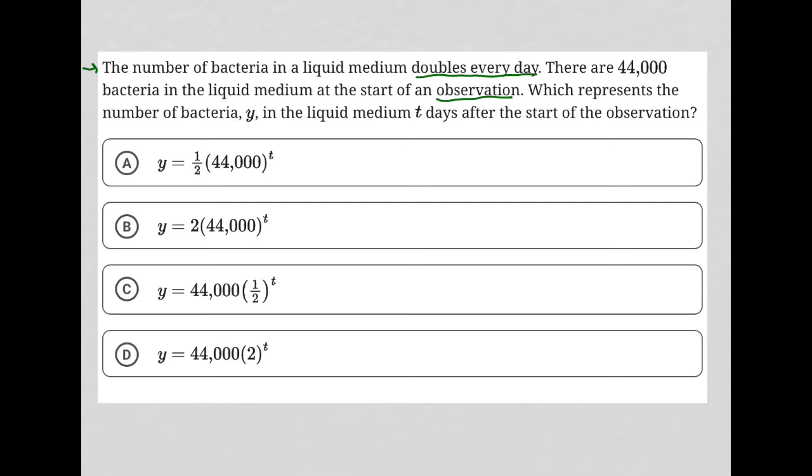Which represents the number of bacteria Y in the liquid medium T days after the start of the observation. Well, we know at T equals zero days, right, at the very start, there should be 44,000 bacteria. And we know because it doubles every day, so at T equals one day, it should be double 44,000, which the math is pretty simple for. It would just be 88,000. I'm going to use this knowledge to solve the question.